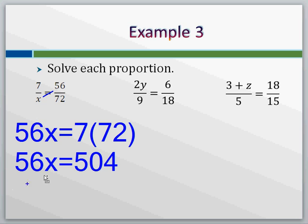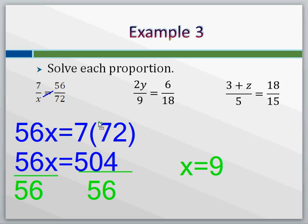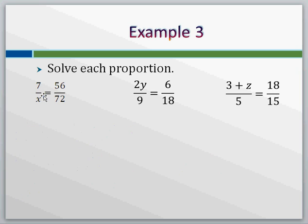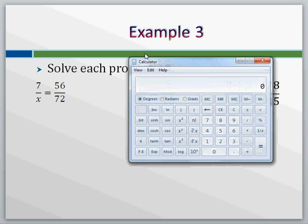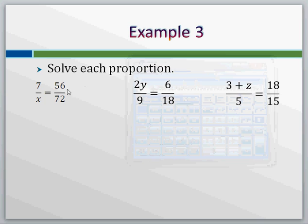If we do the logical thing, divide both sides by fifty-six, we're going to wind up with x equals five-oh-four over fifty-six, which equals nine. We got x equals nine for this first one. We can check that if we want to. If we do seven over nine on your calculator and fifty-six over seventy-two on your calculator, seven over nine is point seven seven seven seven repeating, fifty-six over seventy-two is the exact same thing. We know for this first one, x equals nine.